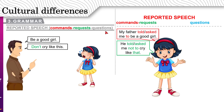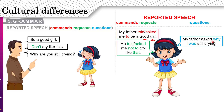Now, questions. Why are you still crying? To report that, my father asked me — you say, asked me — why I was still crying. Copy the same question word: why. But notice what we did here — there is no question mark. We have a question mark in the original, but no question mark in the reported form. We don't say 'was I still crying?' We switch the subject pronoun and the verb be, and we use past tense: I was, you were. I was still crying.